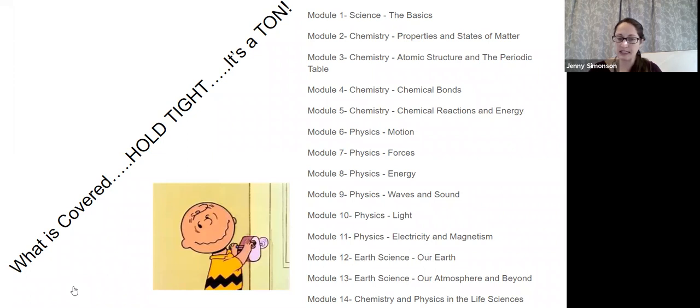We get towards the end of the year, we do a little bit of earth science where we'll cover the structure of the earth, rocks, minerals, different features of the earth. We'll do energy and the atmosphere and pressure, and then we'll bring it all together at the end of the year with the carbon cycle, photosynthesis, and cellular respiration.